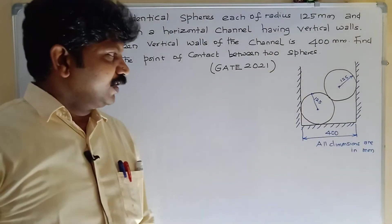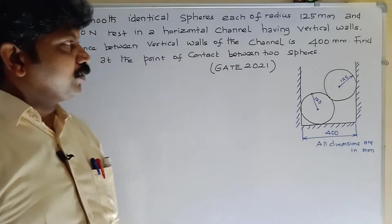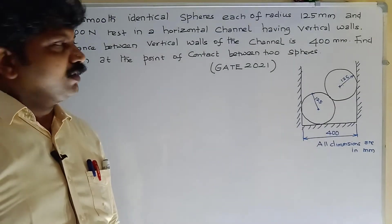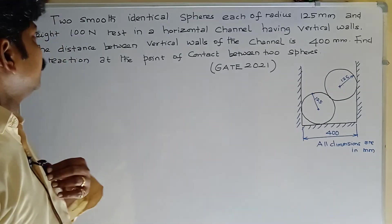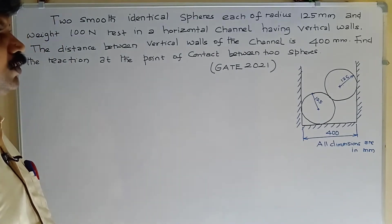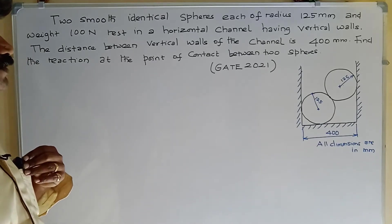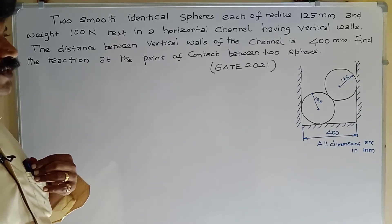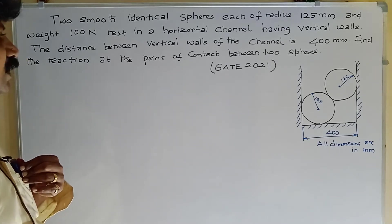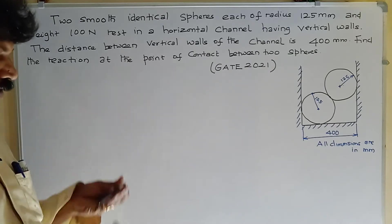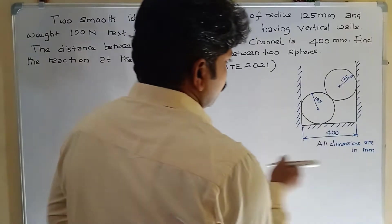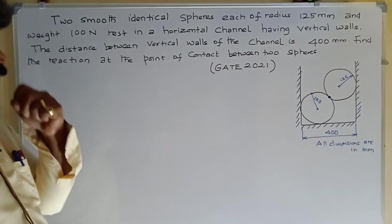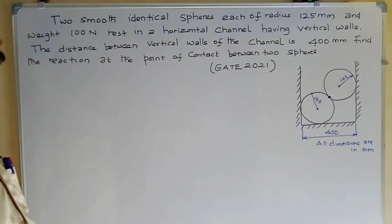Dear students, welcome. We are going to solve one problem from GATE 2021 in engineering mechanics. Two smooth identical spheres, each of radius 125 mm and weight 100 Newton, rest in a horizontal channel having vertical walls. The distance between the vertical walls of the channel is 400 mm. Find the reaction at the point of contact between the two spheres.